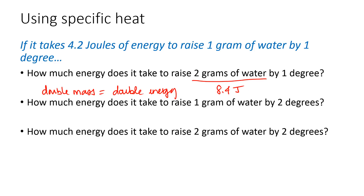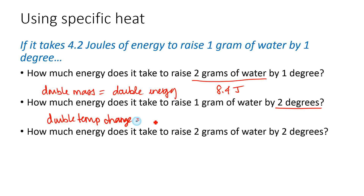What if you're doing 1 gram of water by 2 degrees? So you're going to have to do double the temperature change. It seems reasonable that that's also going to take double the energy. So again, this one would take 8.4 joules.